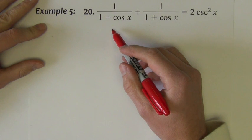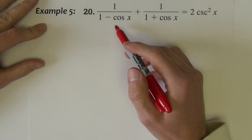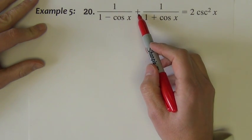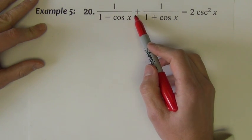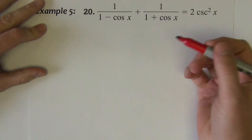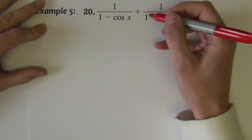This next example is one in which we're going to attempt to prove the identity by combining two fractions by adding them.